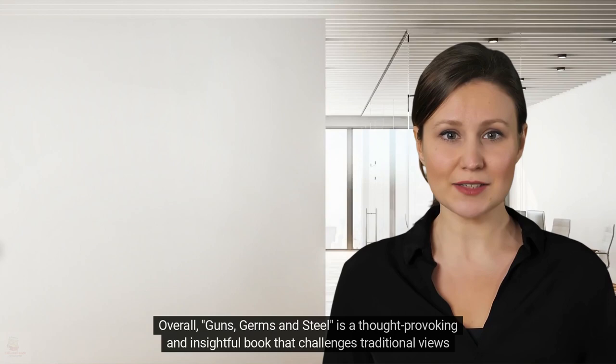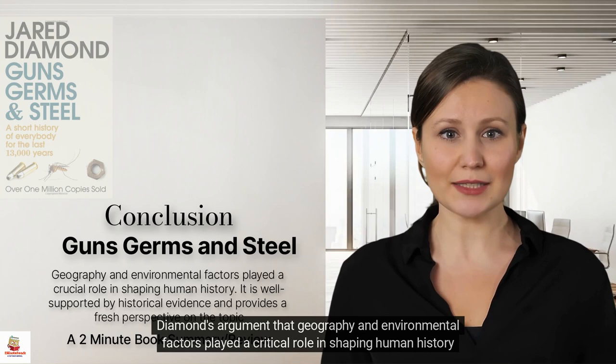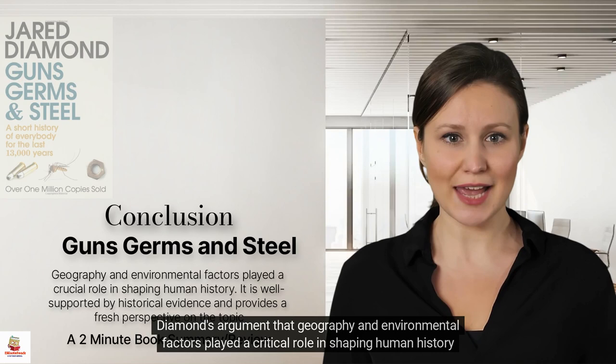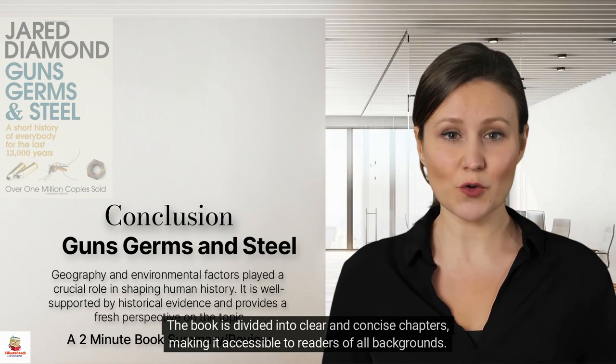Overall, Guns, Germs and Steel is a thought-provoking and insightful book that challenges traditional views on the reasons behind the inequality between human societies. Diamond's argument that geography and environmental factors played a critical role in shaping human history is well supported by historical evidence and provides a fresh perspective on the topic. The book is divided into clear and concise chapters, making it accessible to readers of all backgrounds. It is a must-read for anyone interested in understanding the reasons behind differences between human societies.